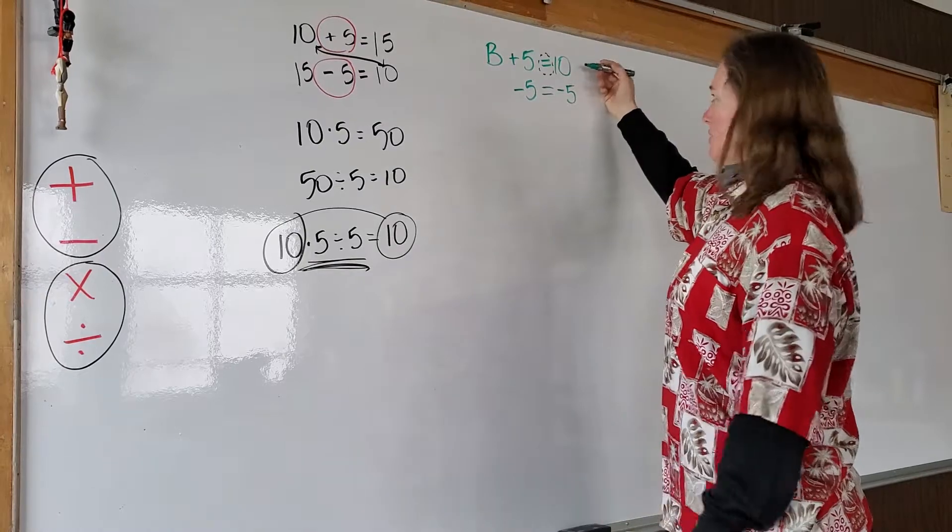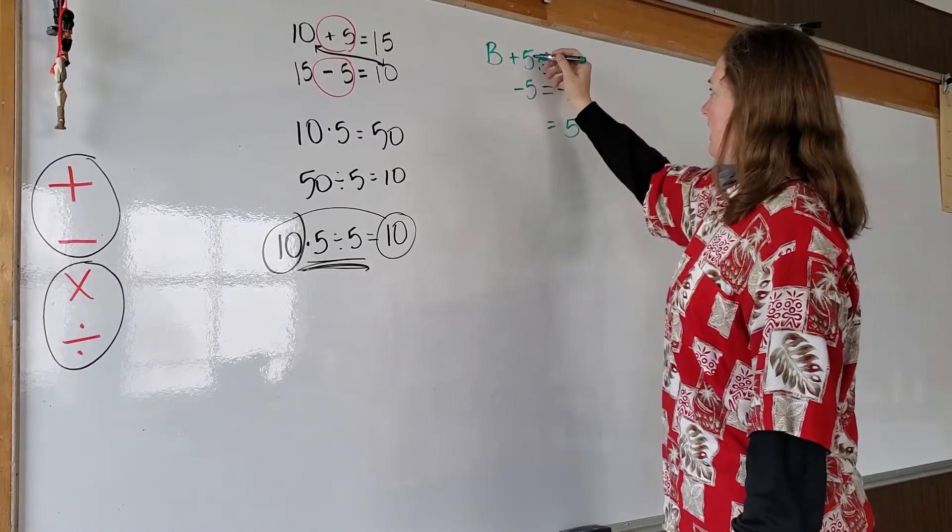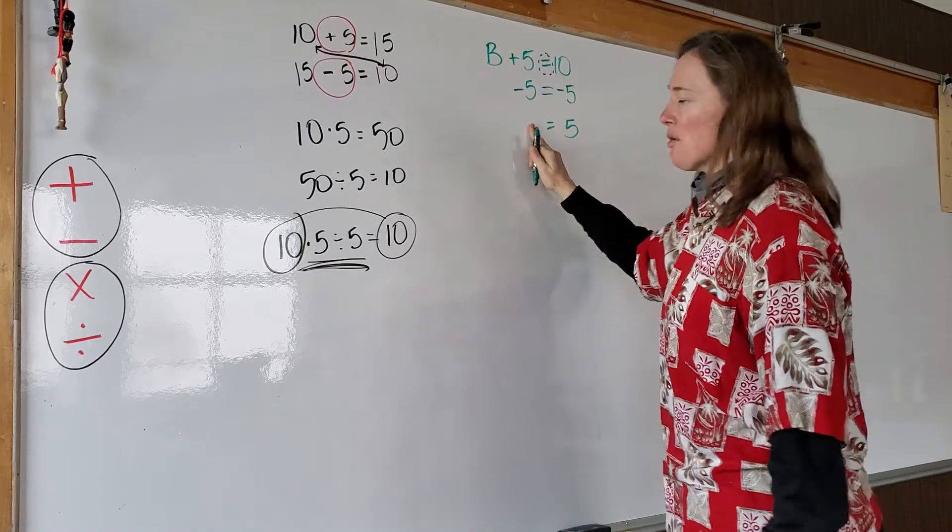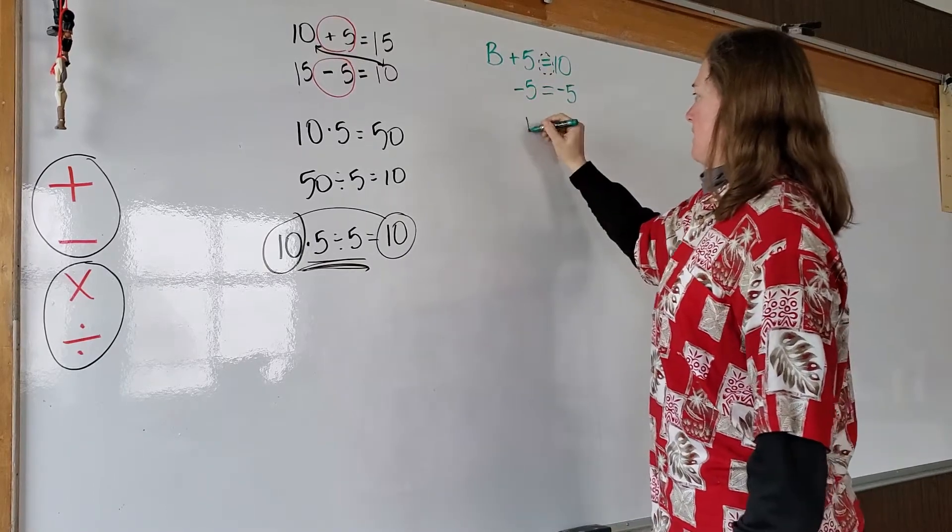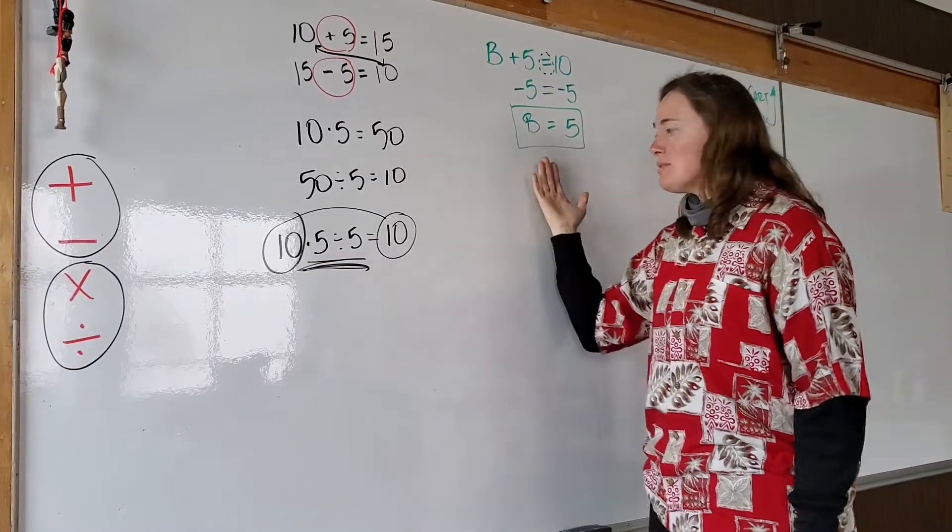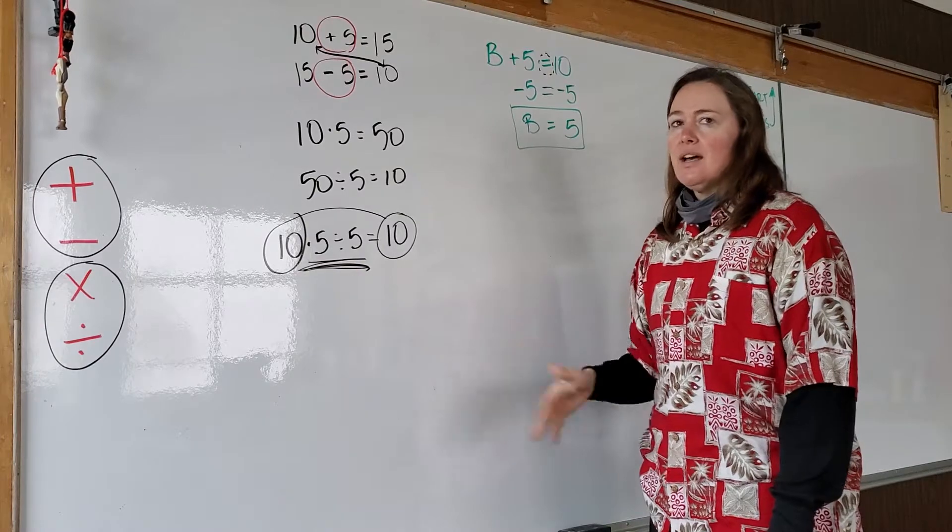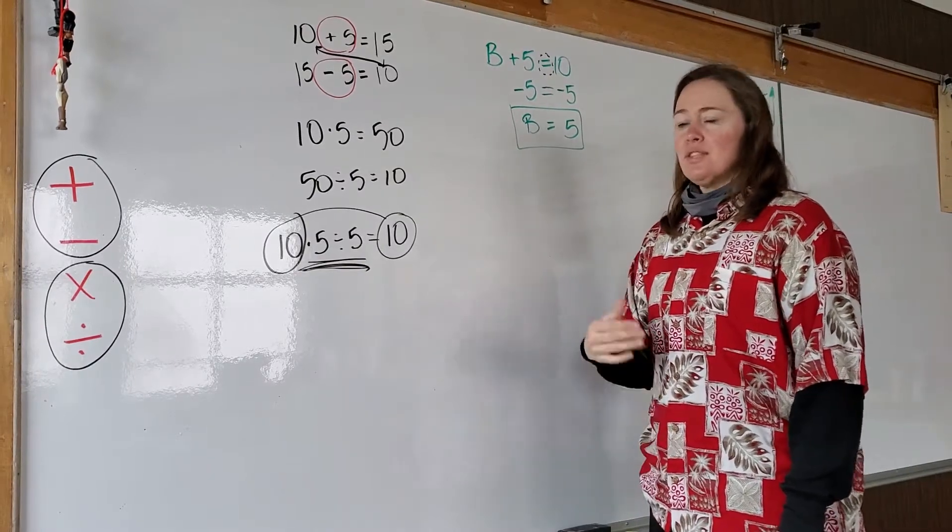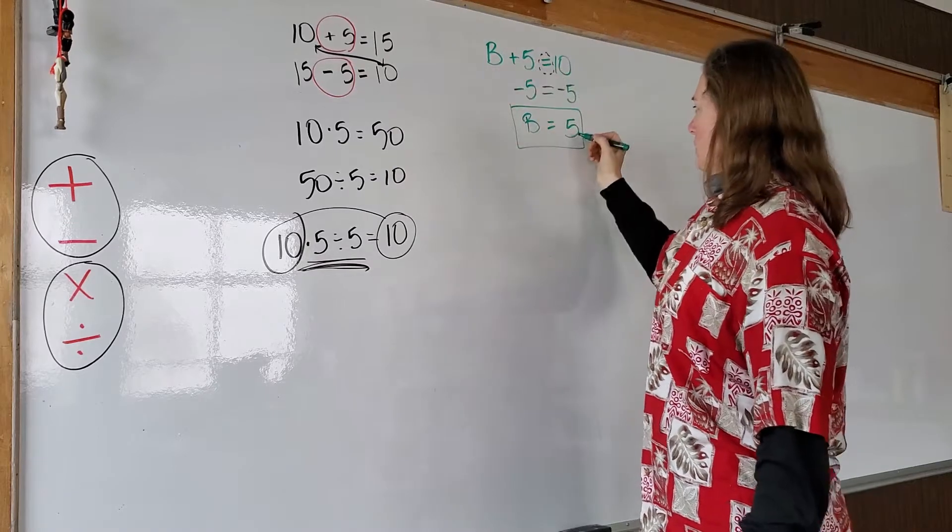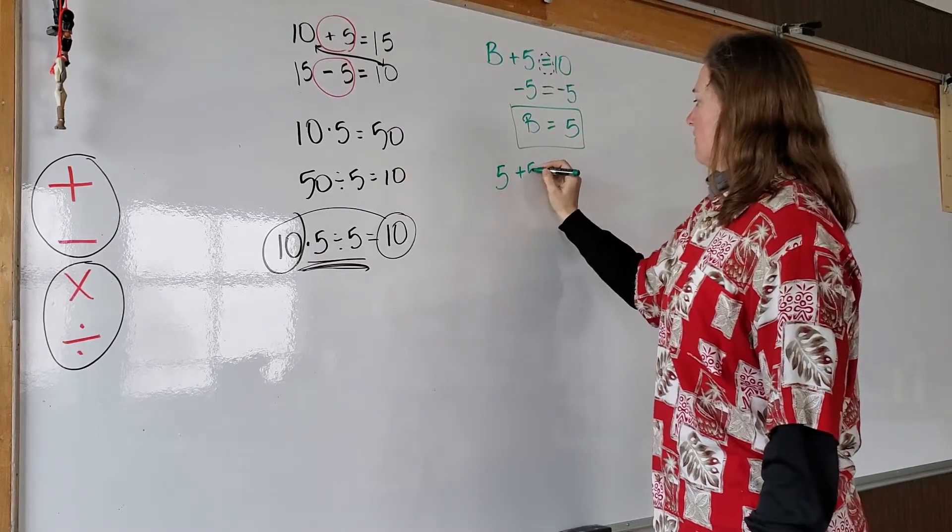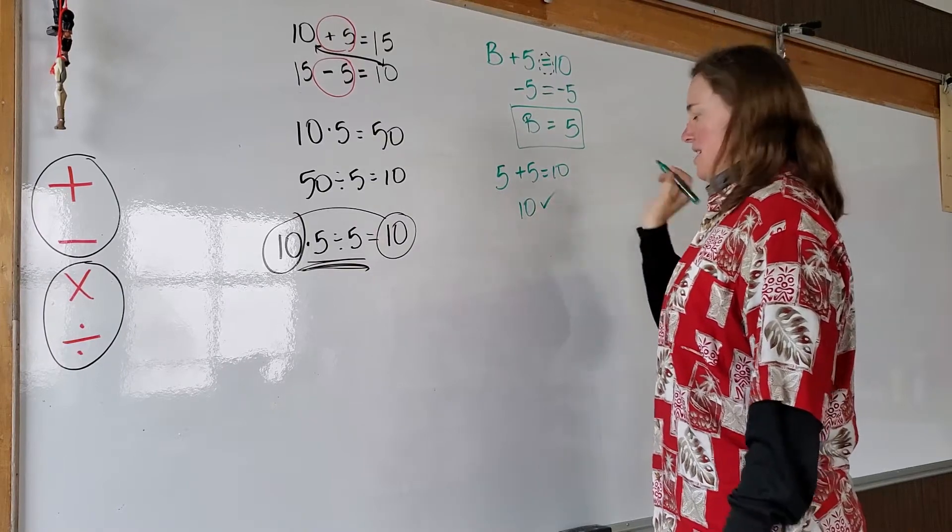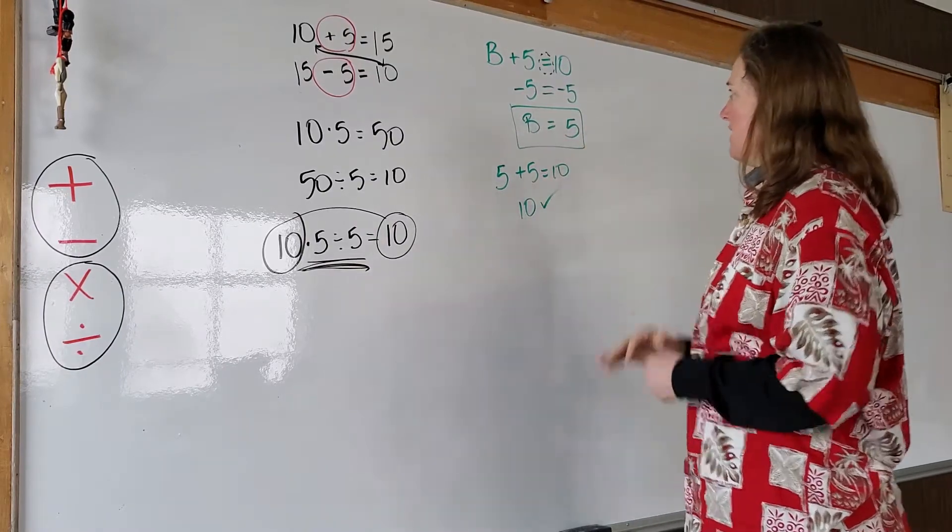Okay, so then this is how we do it. 10 minus 5, oh, that's 5. And 5 minus 5, that's 0. I'm not going to write the 0. And 0 plus B is B. And then, oh, you're going to love this. How do we check to be sure this is right? Substitute the value of the variable. So where there's a B, we'll put its value. 5 plus 5 equals 10. And does 5 plus 5 equal 10? Yeah. So B is equal to 5.